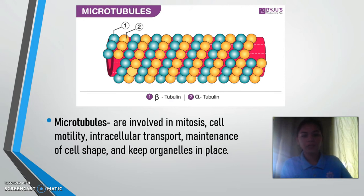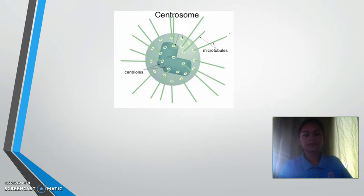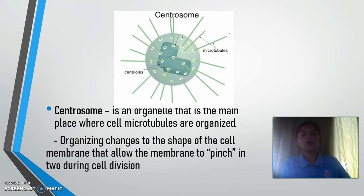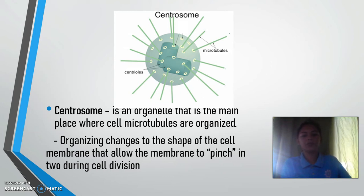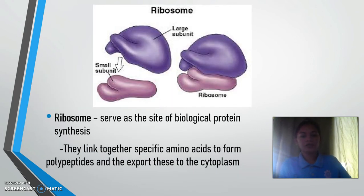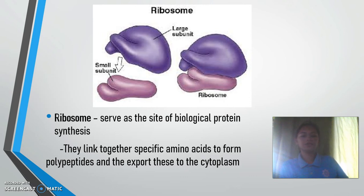Microtubules are involved in mitosis, cell motility, cellular transport, maintenance of cell shape, and keeping organelles in place. The centrosome is an organelle that is the main place where cell microtubules are organized, organizing changes to the shape of the cell membrane during cell division. Ribosomes serve as the site of biological protein synthesis; they link together specific amino acids to form polypeptides and export these to the cytoplasm.